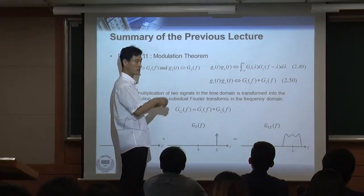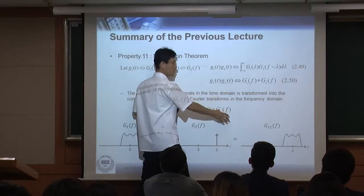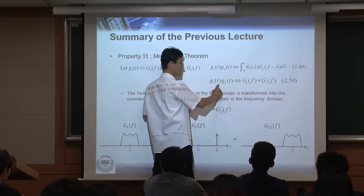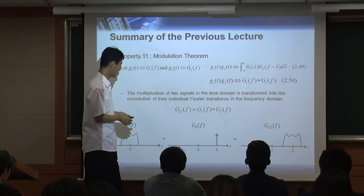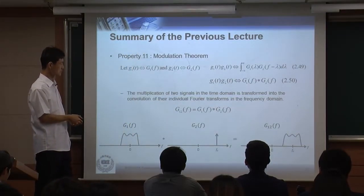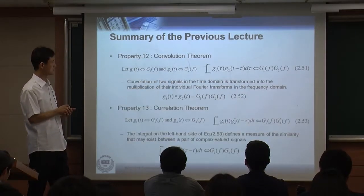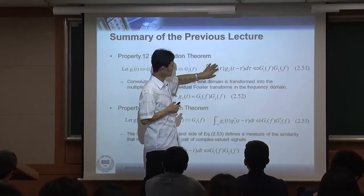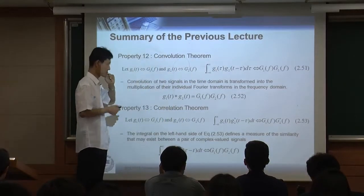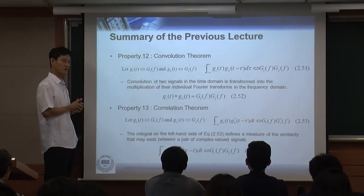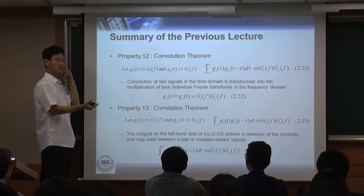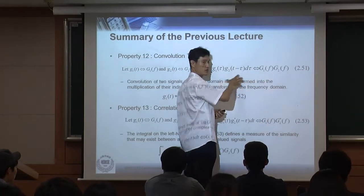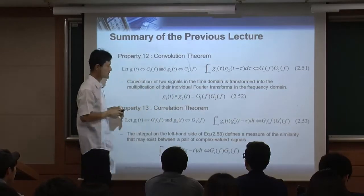There was also the convolution theorem before this. The convolution theorem states: when you multiply two different signals in the frequency domain, it's going to be convolution in the time domain. Simply remember: multiplication in one domain equals convolution in the other domain. Multiplication in time → convolution in frequency; multiplication in frequency → convolution in time.